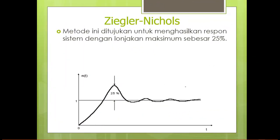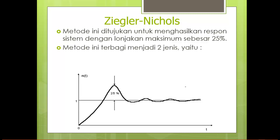Metode ini ditujukan untuk menghasilkan respon sistem dengan lonjakan maksimum sebesar 25%. Metode Ziegler-Nichols terbagi menjadi dua: yang pertama adalah metode kurva reaksi, yang cukup sering digunakan, dan yang kedua adalah metode osilasi.